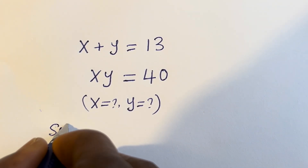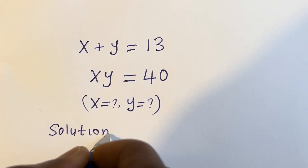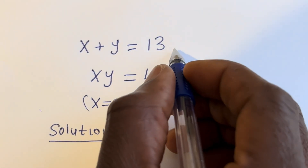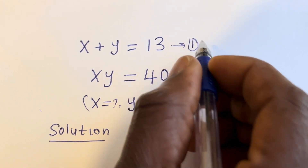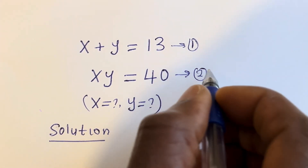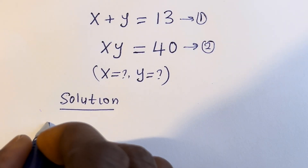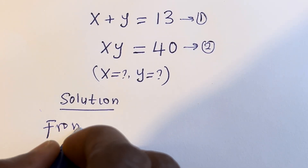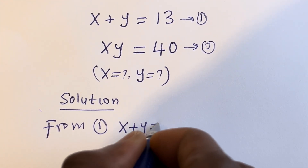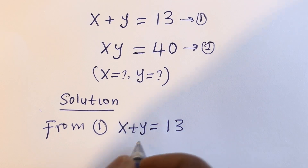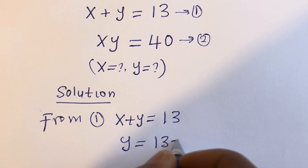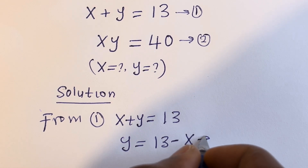Solution. S plus Y is equal to 13 — let's call this equation 1. S times Y is equal to 40 — let's call this equation 2. From equation 1, S plus Y is equal to 13, so Y is equal to 13 minus S. This is equation 3.